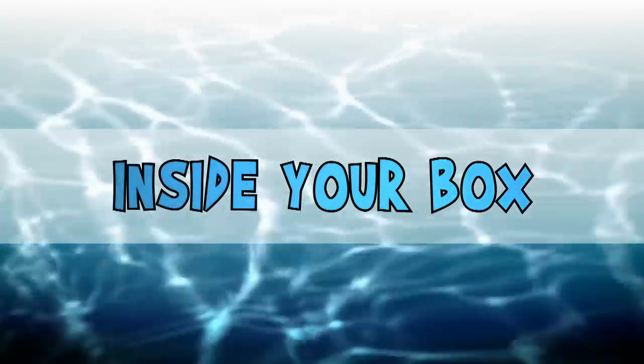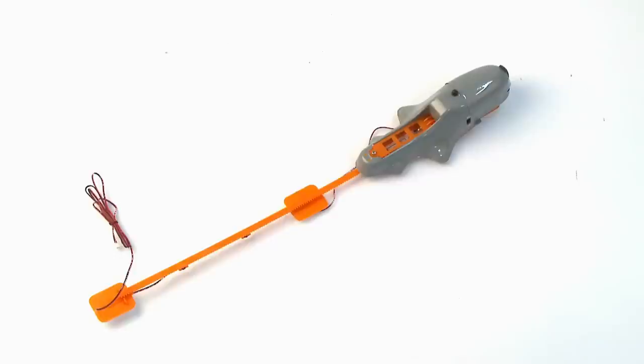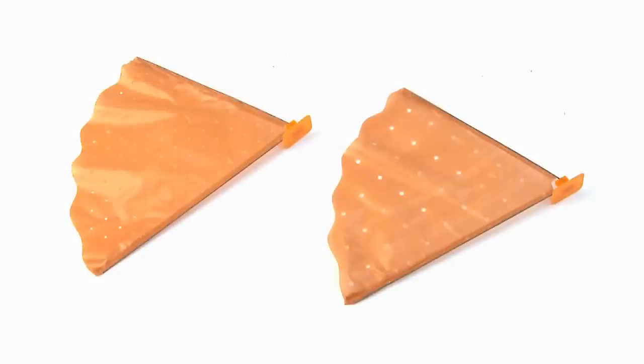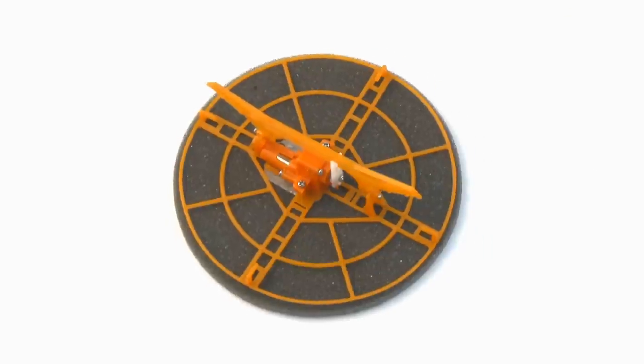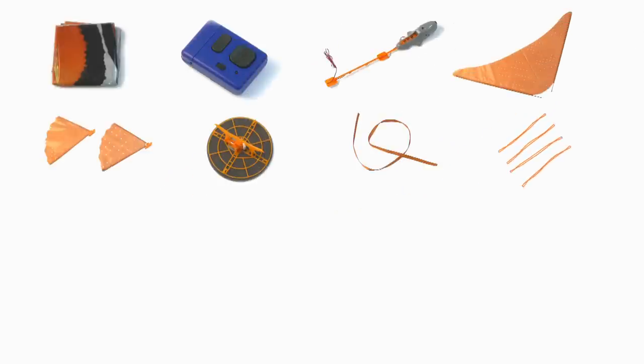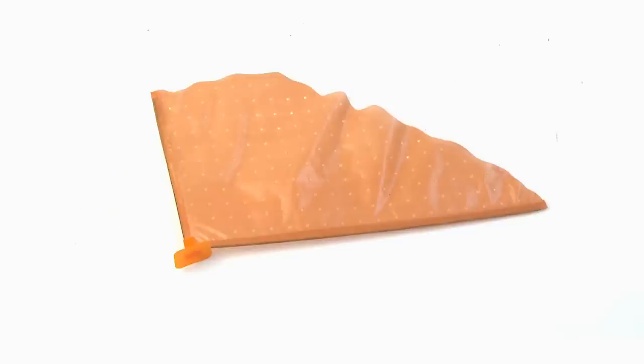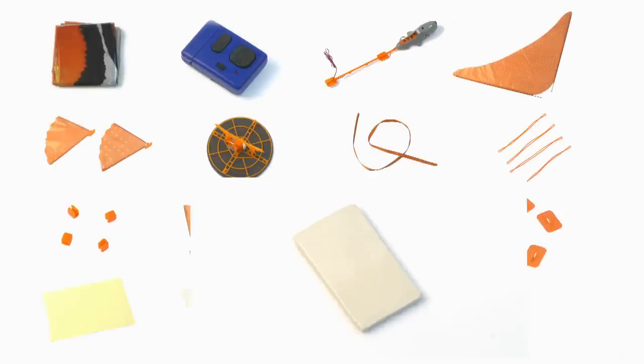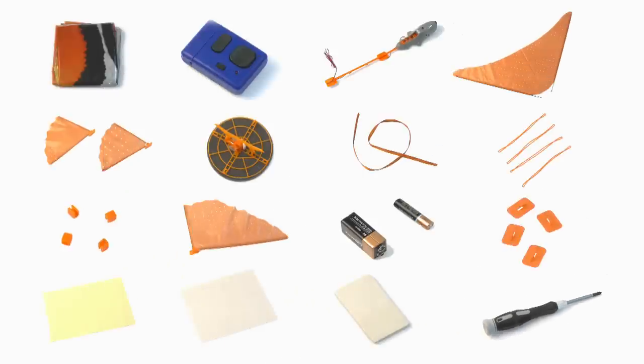Inside your Airswimmer box you will find the following: one Airswimmer balloon, one remote control, one pod track, one tail fin, two underbelly fins, one tail motor unit with foam spacer, one ribbon, four elastic bands, four fastening clips, one dorsal fin, one triple A and one 9-volt battery, four hooks, eighteen clear tape tabs, twelve double-sided sticky pads, one putty. You will also require a small cross-head screwdriver.